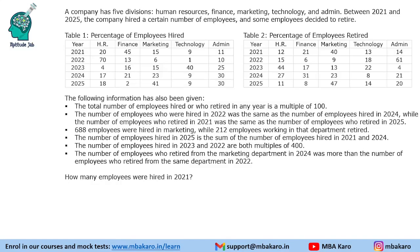Hello everyone, welcome to AptitudeJab. This set says that a company has 5 divisions: HR, Finance, Marketing, Technology, and Admin. Between 2021 and 2025, the company hired a certain number of employees and some employees decided to retire.